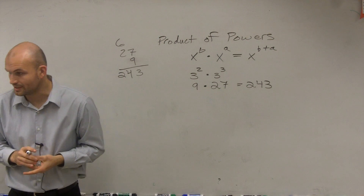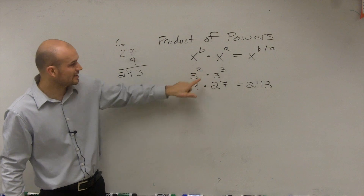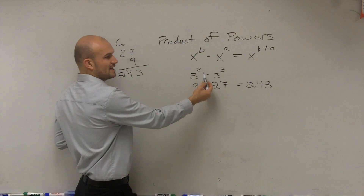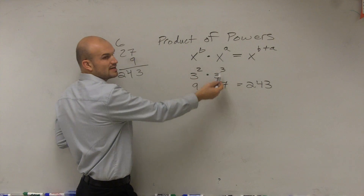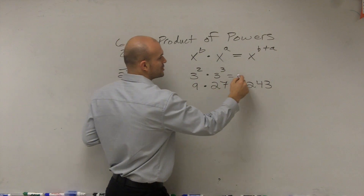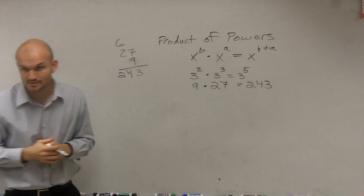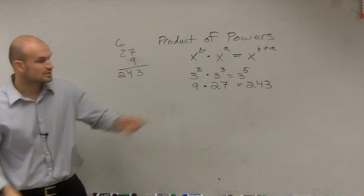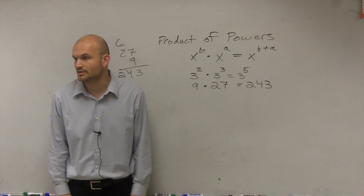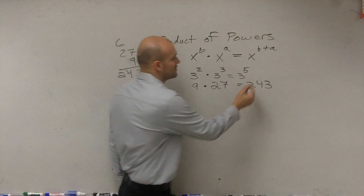Now, if you guys want to check in your calculator, you guys can check this. Rather than just simplifying each one of these, we can also say that 3 squared times 3 cubed is equal to 3 to the fifth power. So what is 3 to the fifth power? If anybody wants to check in their calculator — 243.